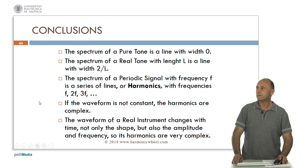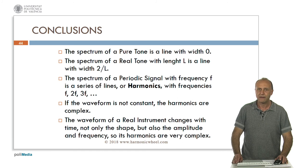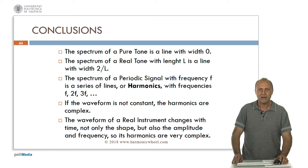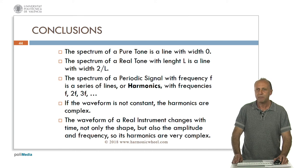As conclusions: the spectrum of a pure tone is a line with width 0. The spectrum of a real tone with length L is a line with width 2 divided by L. The spectrum of a periodic signal with frequency F is a series of lines or harmonics with frequencies F, 2F, 3F, etc. If the waveform is not constant, the harmonics are complex. The waveform of a real instrument changes with time — not only the shape but also the amplitude and frequency — so its harmonics are very complex. You can find all the information on the webpage HarmonicWheel.com. Thank you very much for your attention.